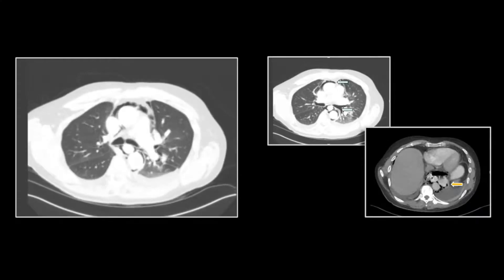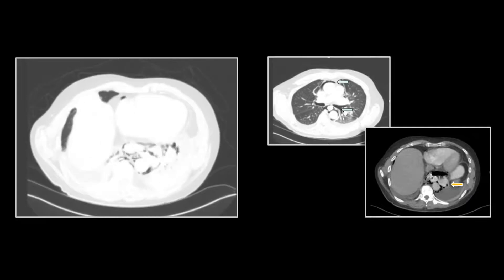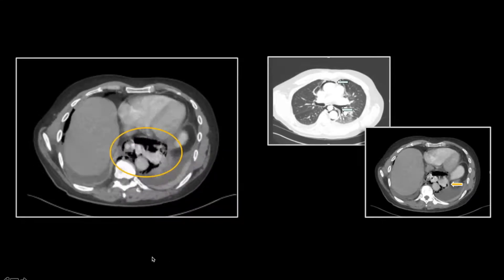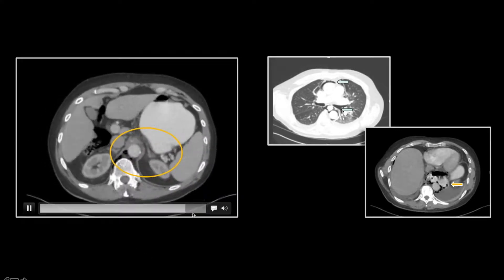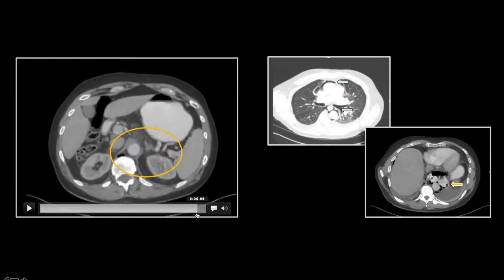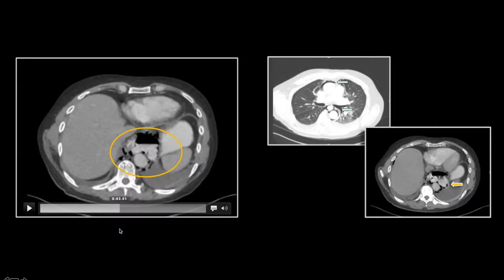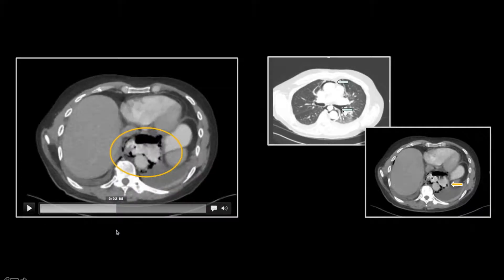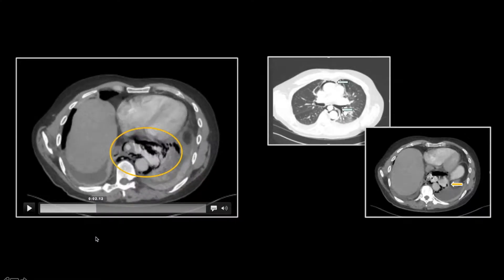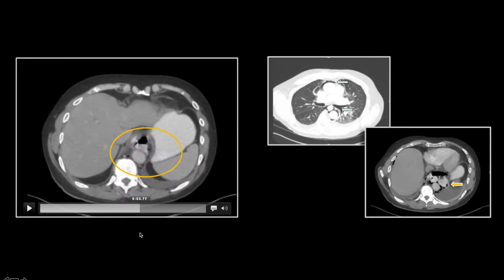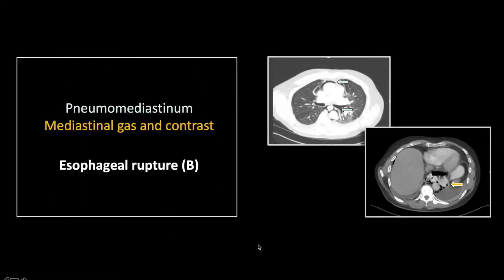This view is to help you appreciate the extent of the pneumomediastinum, and here is the collection of gas and contrast. Scrolling back up lets you appreciate the focal defect on the left lateral aspect of the distal esophagus. You don't always get to directly visualize that defect, but this case shows it quite nicely. So that is another case of traumatic esophageal rupture, this one with associated pneumomediastinum.